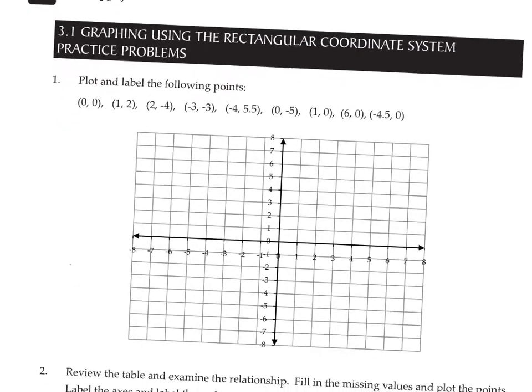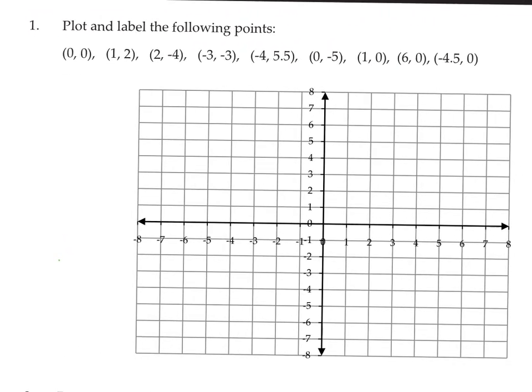We're going to remember that the first coordinate is the x-coordinate and refers to left or right movement. The second coordinate is the y-coordinate and refers to vertical movement. This first point (0,0) is of course right in the middle, that's the origin. We'll plot a point there and give these some letters. This will be point A. Point B will be at coordinate (1,2), so first 1 on x and then 2 on y. This will be point B right here.